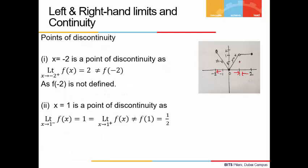What are the two points of discontinuity? At x = -2: the function is not defined here, so we have only a one-sided limit. Approaching -2 from the right, the function moves towards 2. So the limit as x → -2⁺ is 2. But the function value is not defined there — we see an empty circle on the graph. Since the limit and the function value are not equal, x = -2 is a point of discontinuity.